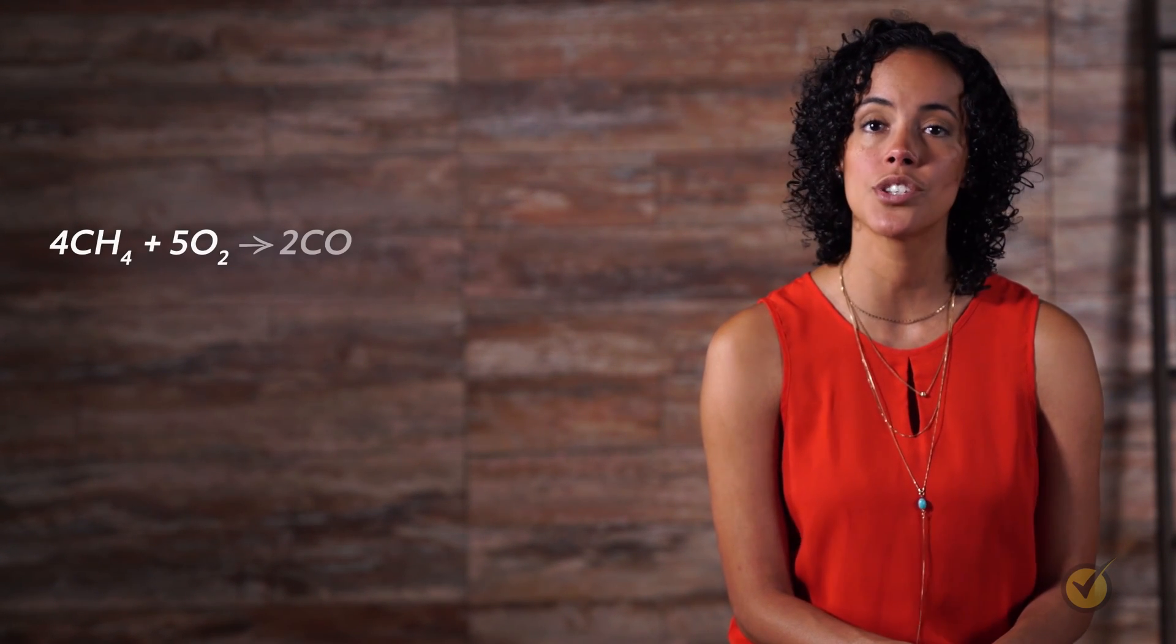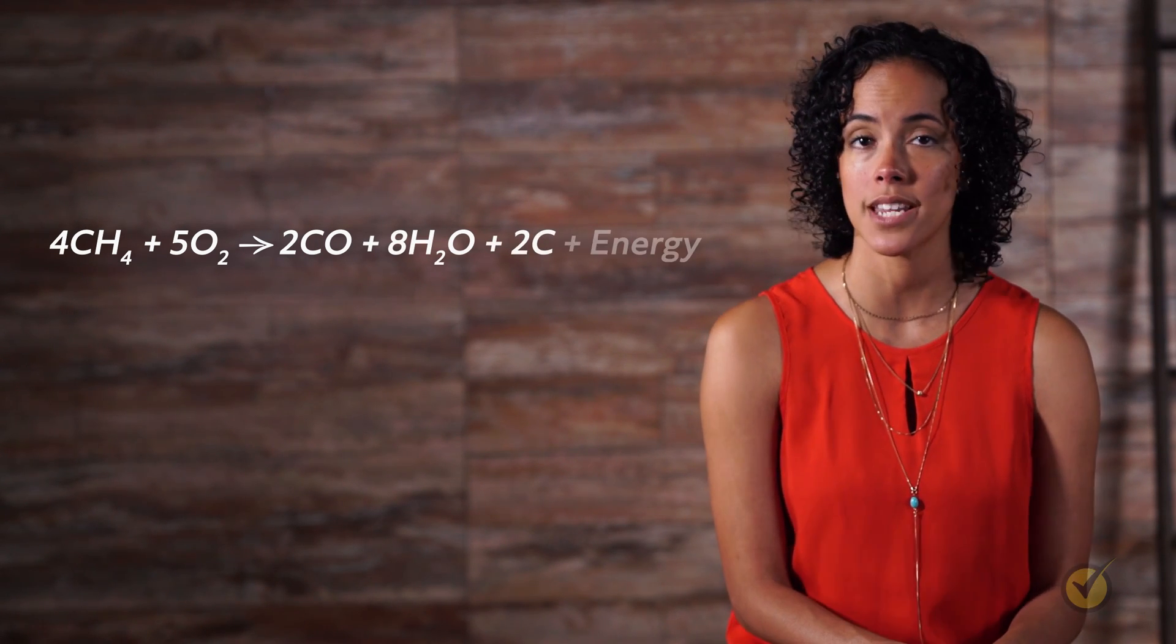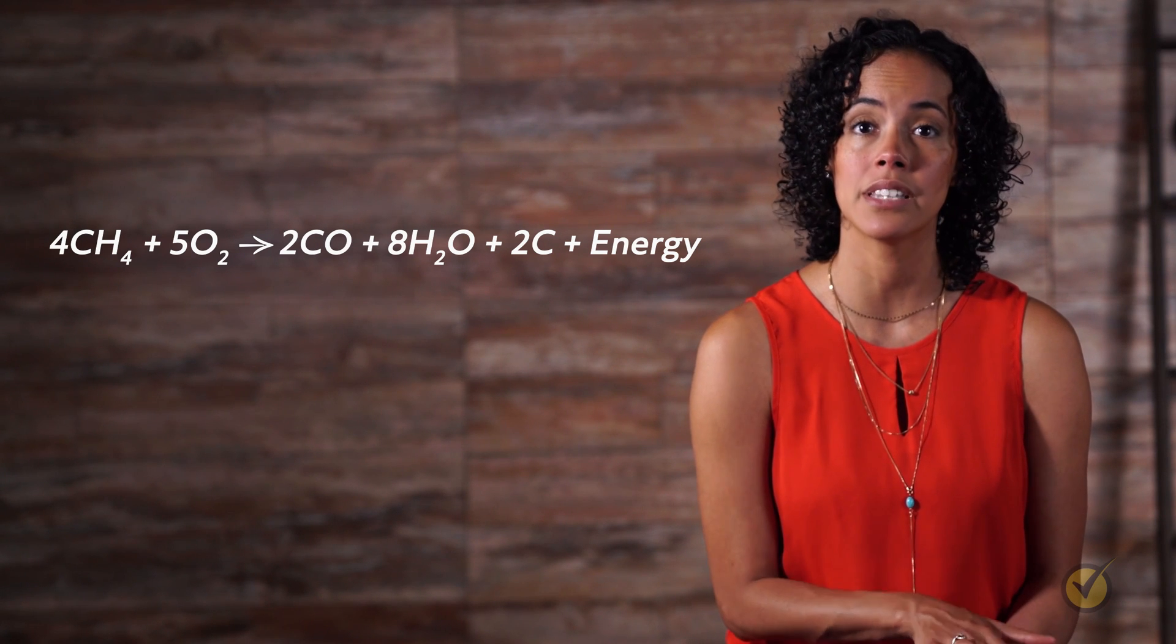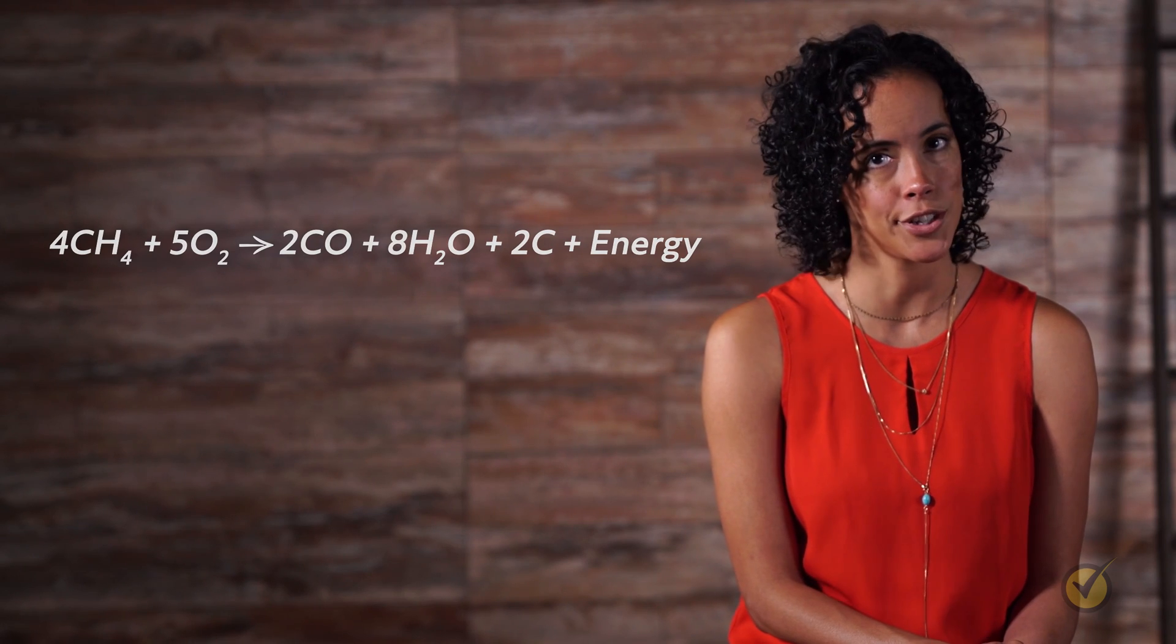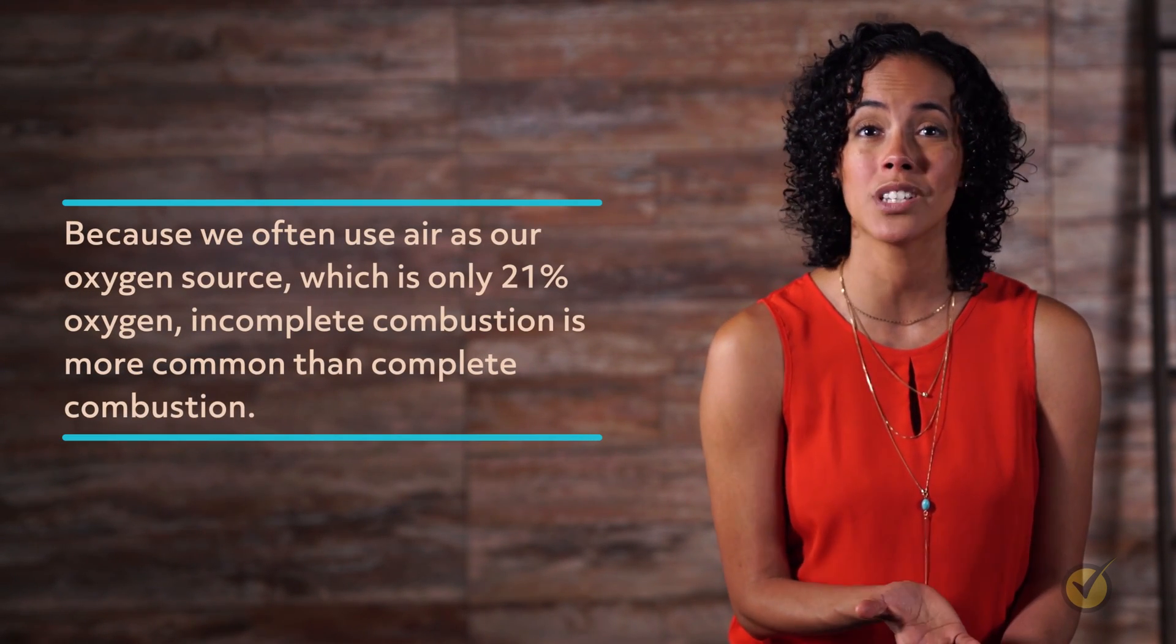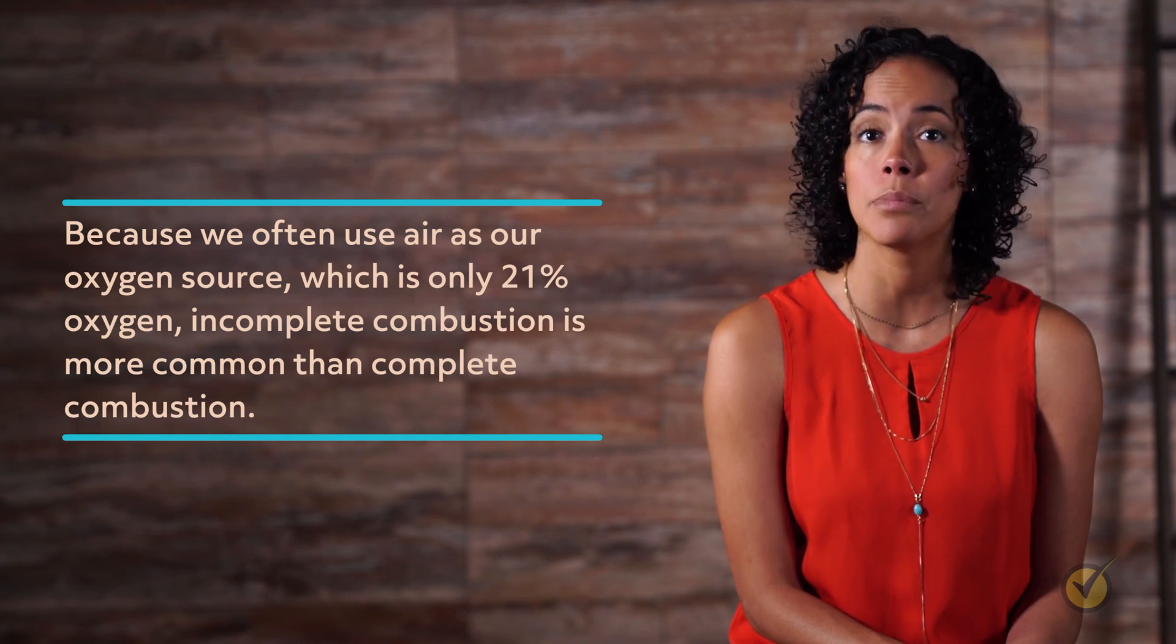Here's the chemical equation showing an example of incomplete combustion of methane. 4CH4 plus 5O2 yields 2CO plus 8H2O plus 2C plus energy. Note that instead of producing carbon dioxide as in the complete combustion, methane is converted to carbon monoxide and carbon. Because we often use air as our oxygen source, which is only 21% oxygen, incomplete combustion is more common than complete combustion.